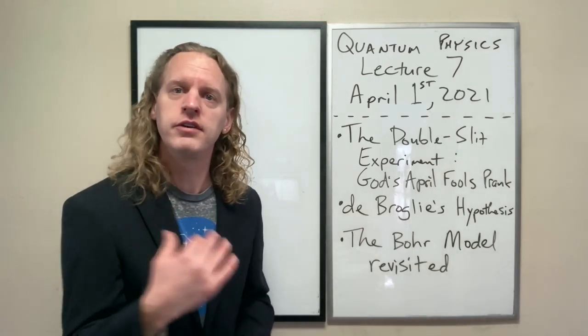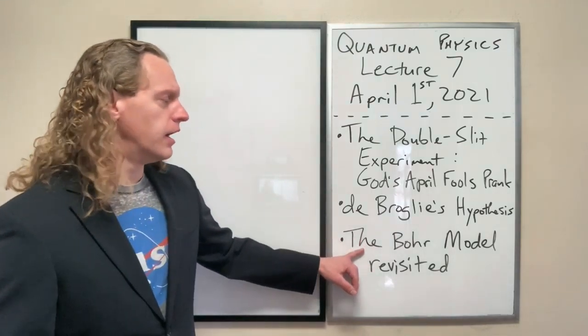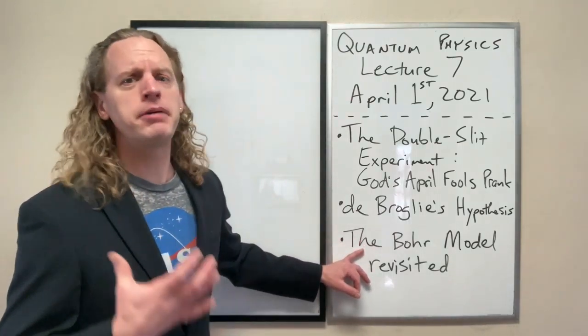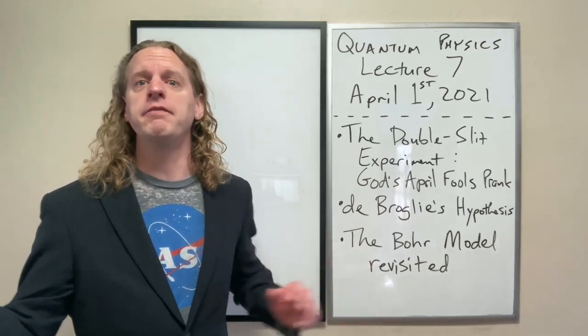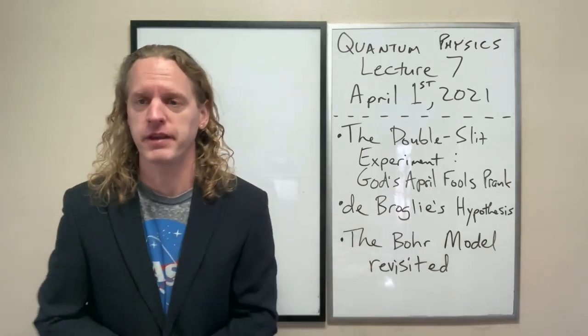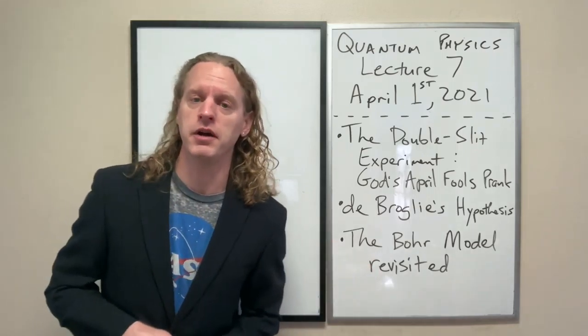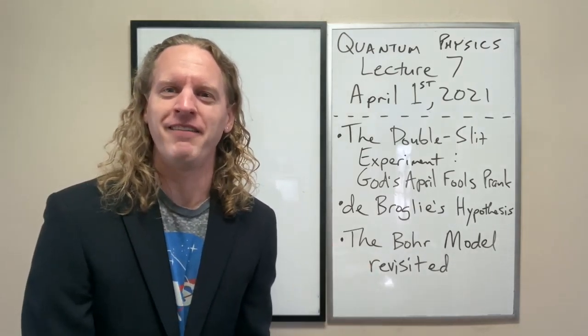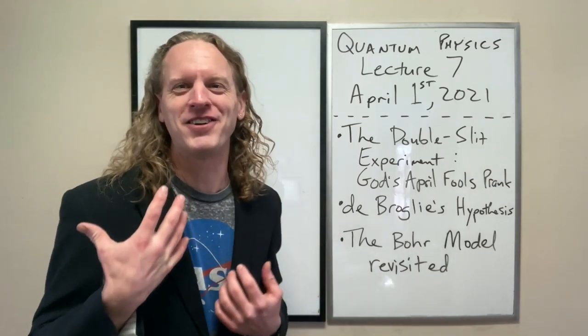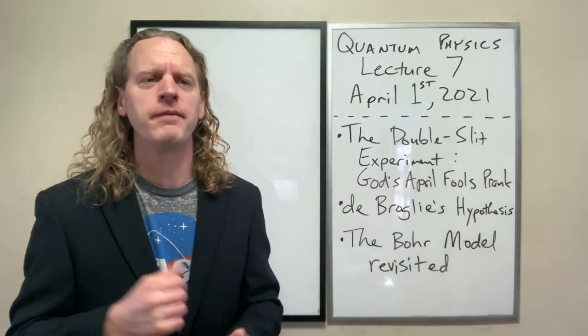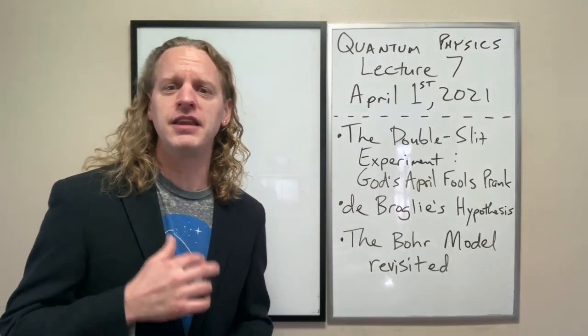And so I think the Bohr model that a lot of people learn in say chemistry class or maybe in introductory physics or something like that, where you describe the Bohr model as you talk about the words that he explained, the bigger picture is that Bohr not only described what happens or what he thought happens, but he gave a fully mathematical explanation of it. And that's what we're going to get into here.